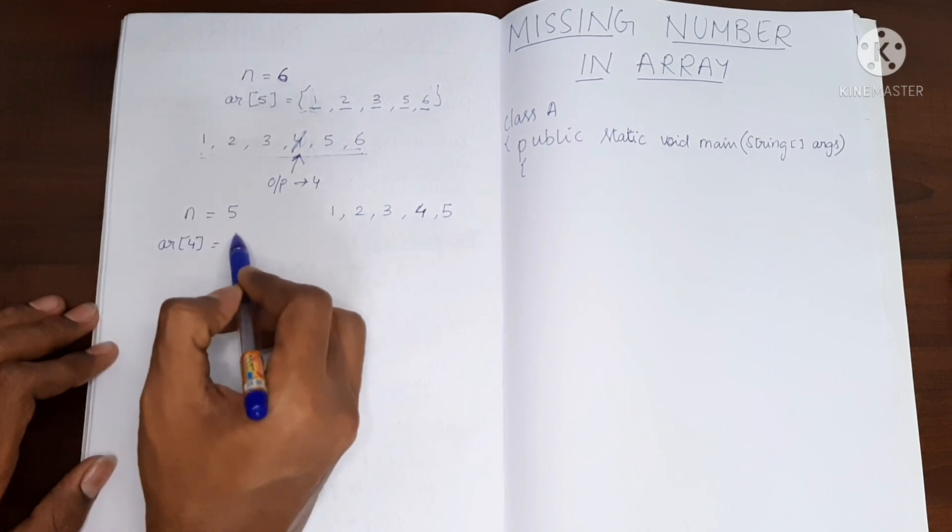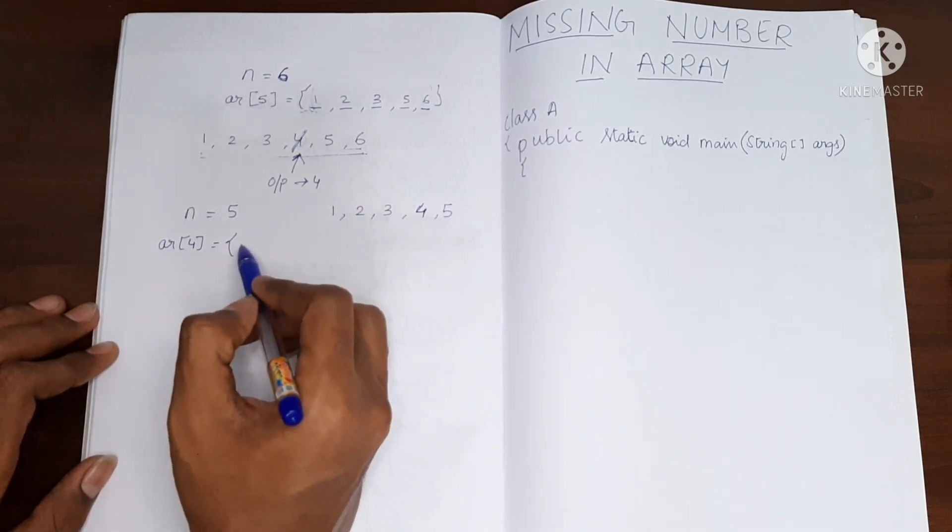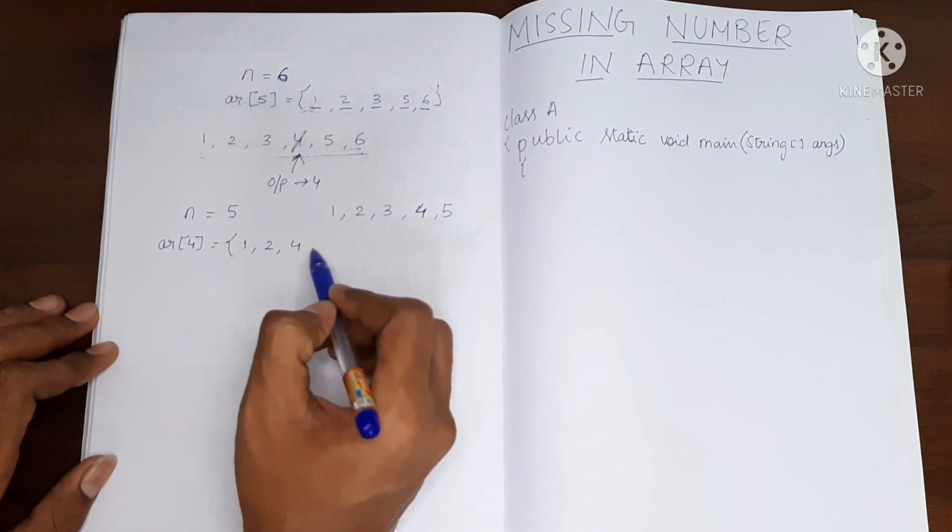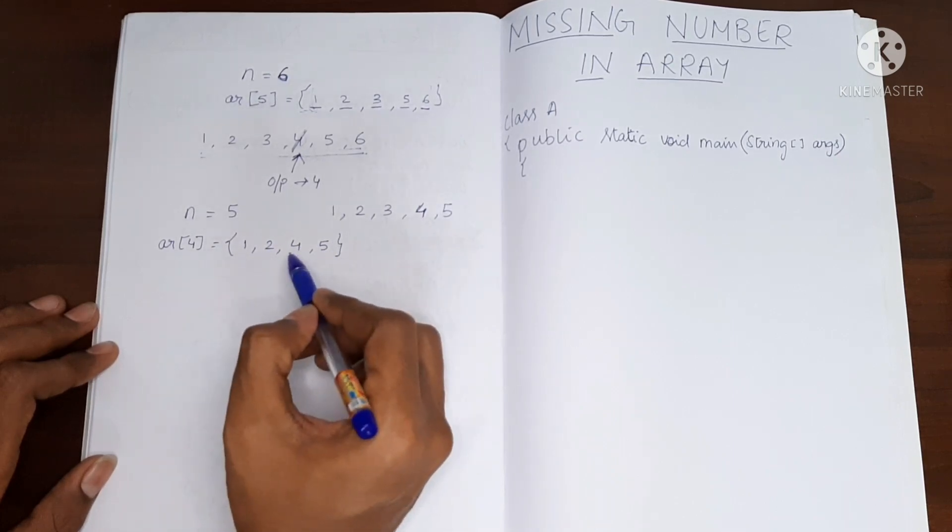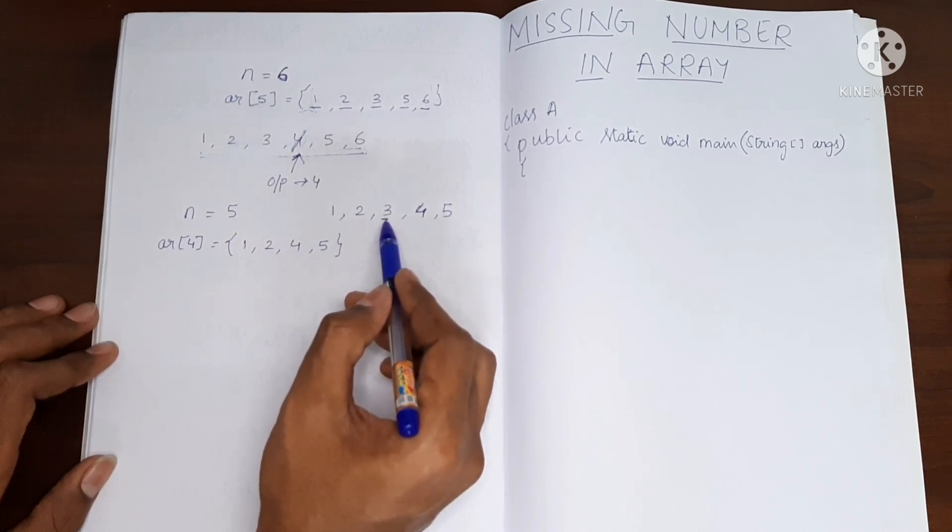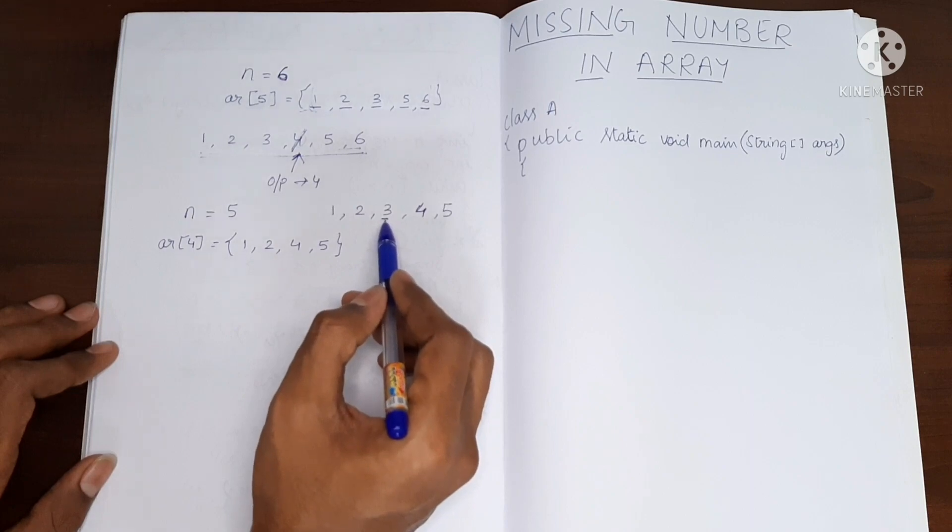These are the numbers which will be present in the array. What will be the size of the array? It will be 4. And let's say the array has values 1, 2, 4 and 5. So you can see that we have excluded 3 over here, and this is the missing value. So how we will find this?